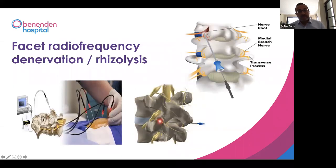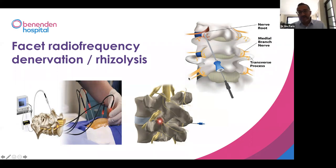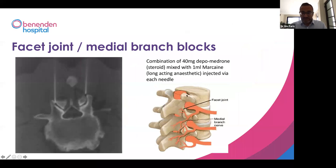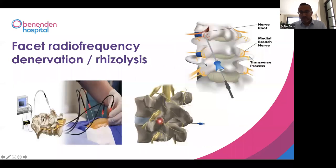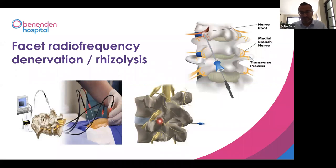This is called radiofrequency denervation — there are a multitude of different names for it. Where we've proven that your pain is coming from particular levels of facet joints, we can then burn, using a small heat source, the nerves that innervate that joint. We target these under CT again. Small needles, not much bigger than the ones we use to inject steroids, are attached to a probe and we burn the nerve endings. We burn the nerve endings that sense pain, but don't supply the muscles.